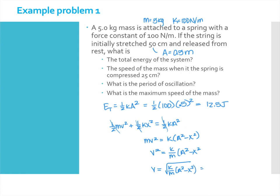Let's just simplify this a little bit. So k is 100, our mass is 5, we have 0.5 squared, minus 0.25 squared. All that's under the square root, we get a speed of 1.94 meters per second.